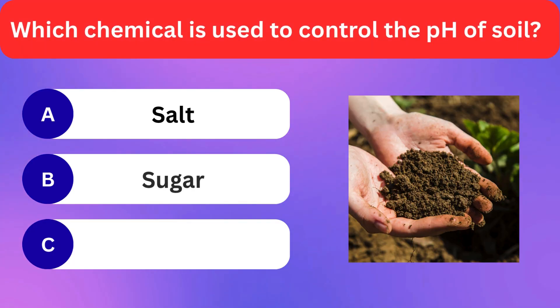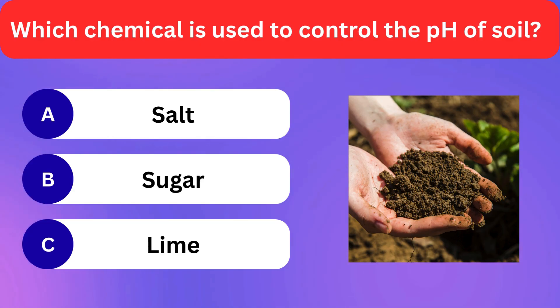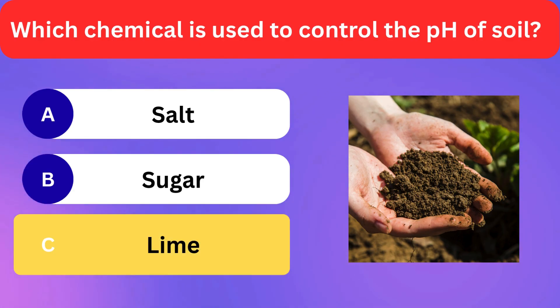Which chemical is used to control the pH of soil? Salt, Sugar, Lime. Correct answer is lime.